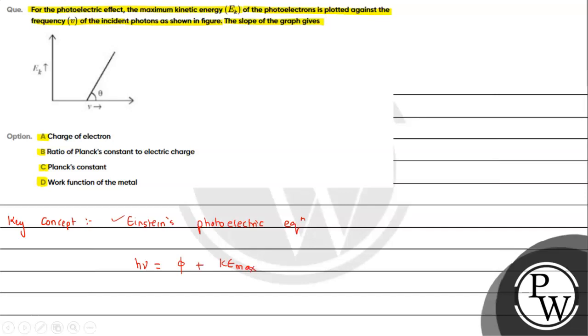The maximum kinetic energy KEmax will be equals to hν minus φ, where ν is the frequency of the incident photon.